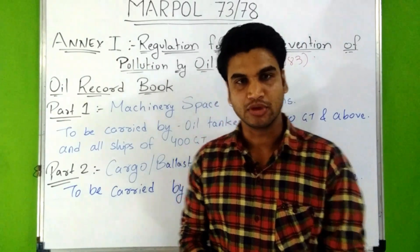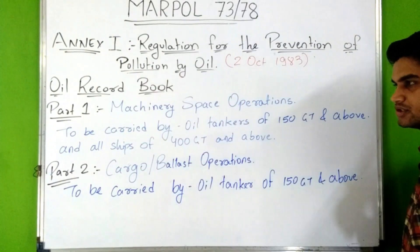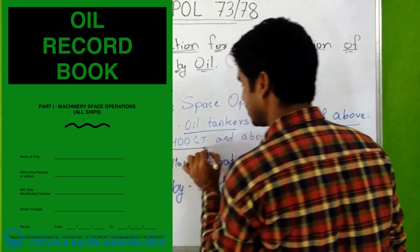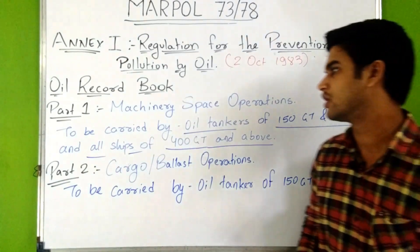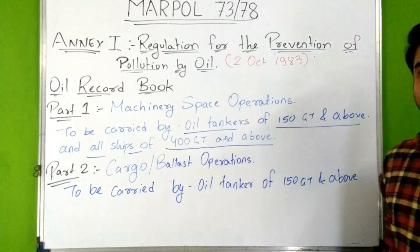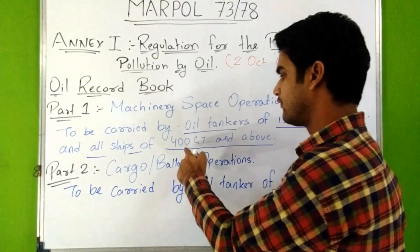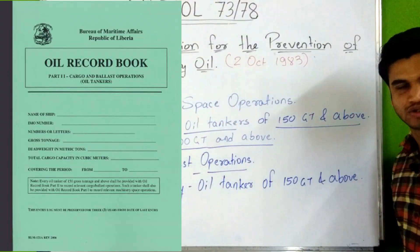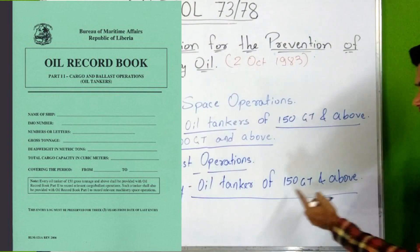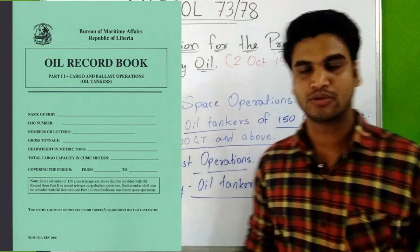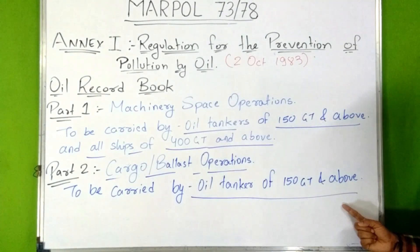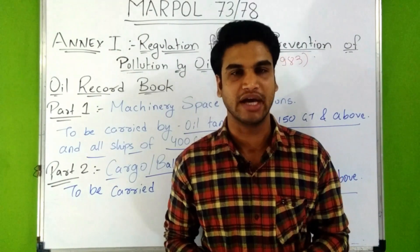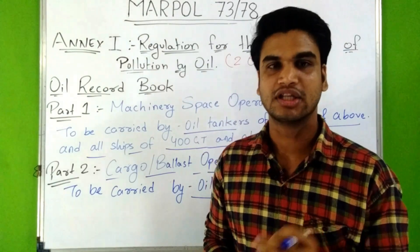Oil record books: Part 1 is for machinery space operations, to be carried by oil tankers of 150 gross tonnage and above and all ships of 400 gross tonnage and above. Part 2 is for cargo and ballast operations, to be carried by oil tankers of 150 gross tonnage and above. Oil record books must be readily available for inspection at any reasonable time and must be kept for three years after the last entry.